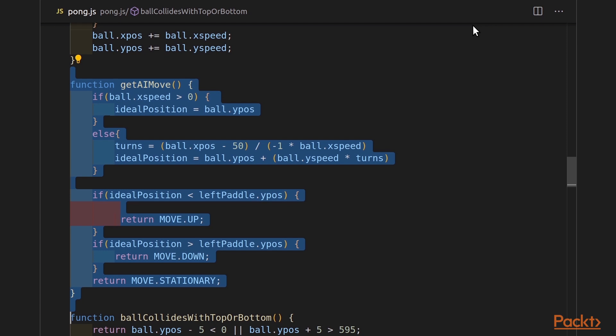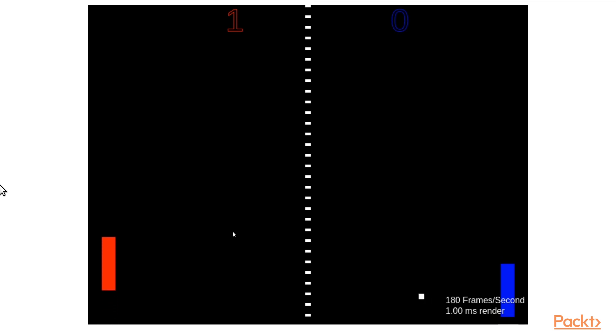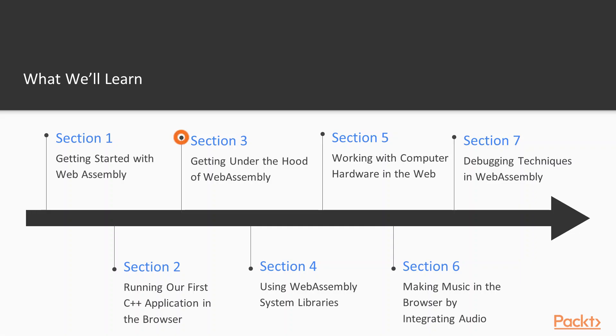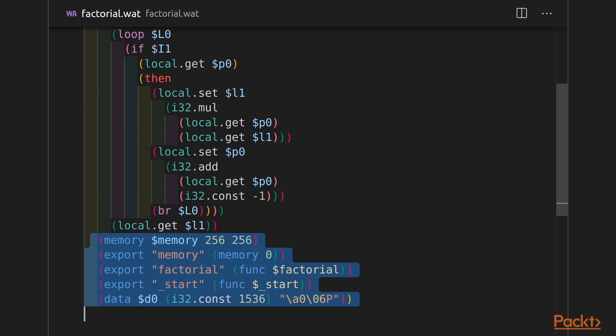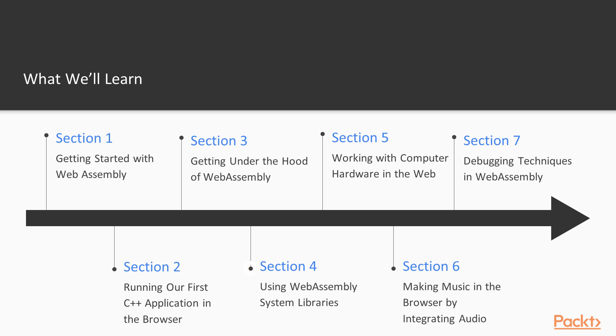Through most of this course, we're going to be re-implementing a JavaScript Pong game in C++ and running it through WebAssembly. In section 3, we pop the hood off of WebAssembly and take a closer look at its internals: how WebAssembly is structured, what the text format looks like, how it gets compiled, and so on. In section 4, we take a deeper dive into WebAssembly system libraries.